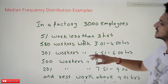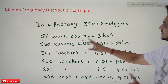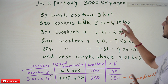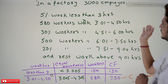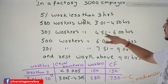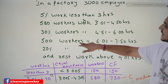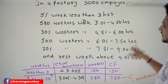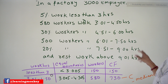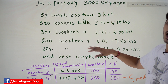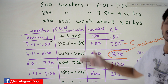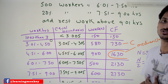There are 3000 employees. 5% of the workers work less than 3 hours in a day, and 580 workers work for 3.01 to 4.50 hours in a day. 30% of the workers work from 4.51 to 6 hours. 500 workers work from 6.01 to 7.50 hours. And the rest of the workers work above 9.01 hours. We have to identify the median value. This is clearly a continuous frequency distribution.